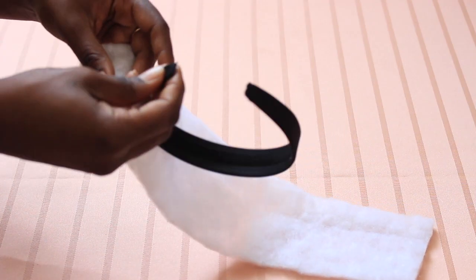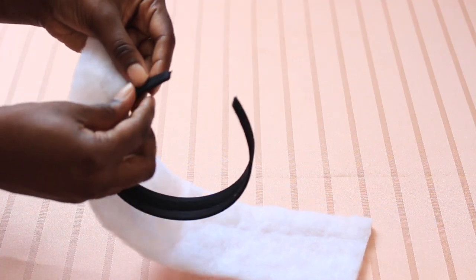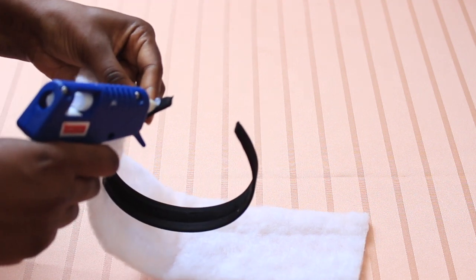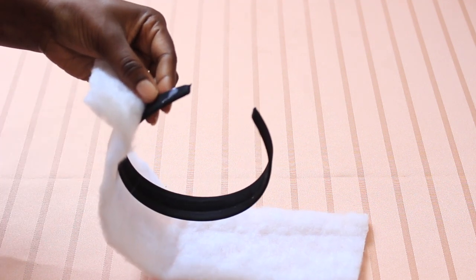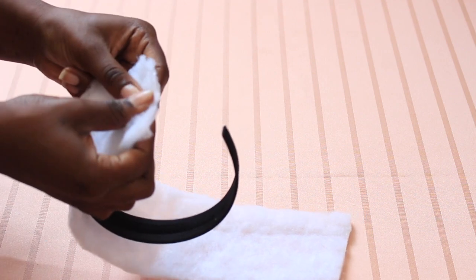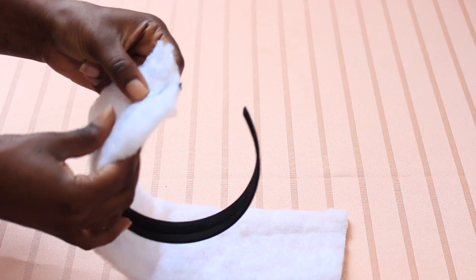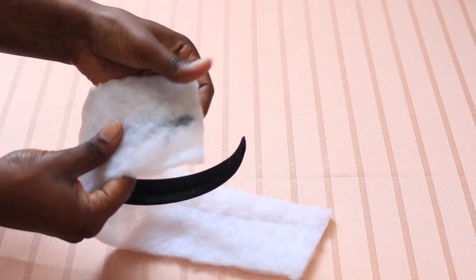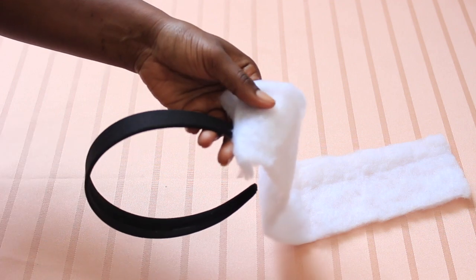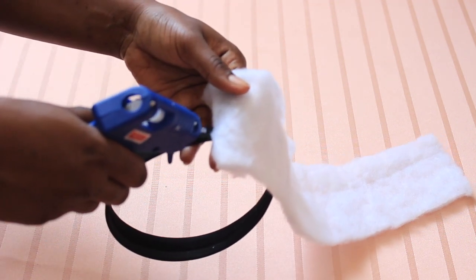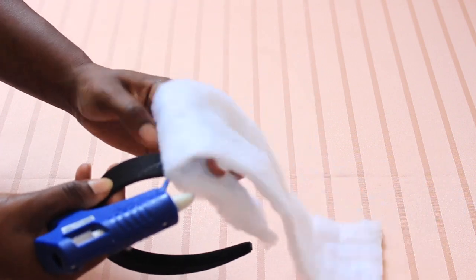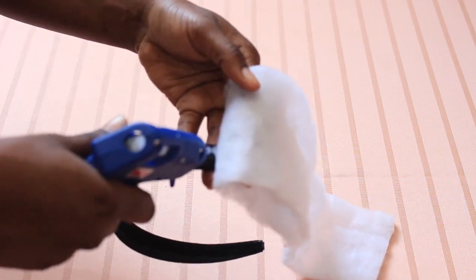Next, we're going to start gluing on the first piece of batting. As you can see here, I'm just putting a dot of glue at the top of the headband and starting to press that down. Then continue putting glue on the headband throughout so I can get that first piece of batting on and secure.